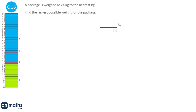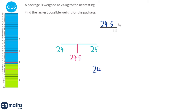To find the largest weight this package could have been before rounding, we draw a number line between 24 and 25, since it's rounded to the nearest kilogram. The cutoff point for rounding is halfway between 24 and 25, which is 24.5. That is our answer. Technically the biggest it can be is 24.49 recurring, which is mathematically equal to 24.5 — but in your exam you can write either.